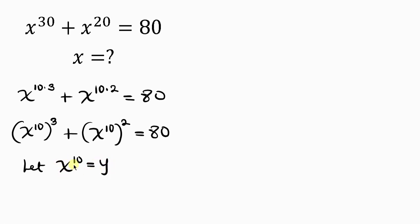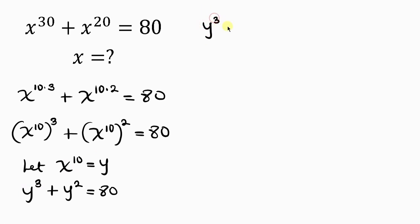That means wherever I see x to the 10 I'm going to put y there. So this expression can be written as y cubed plus y squared equals 80. Our next step will be to move 80 to the left hand side, so we have y cubed plus y squared minus 80 equals 0. So we have a cubic equation to work with.